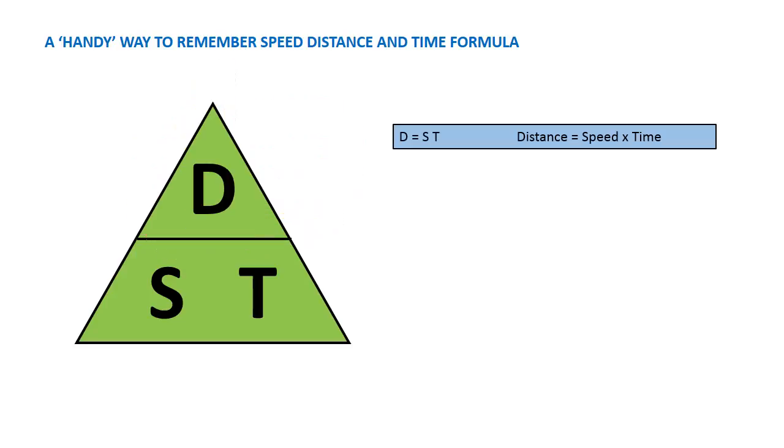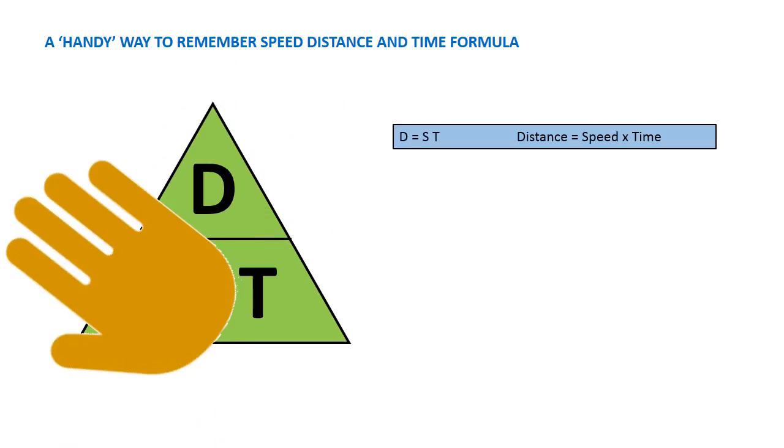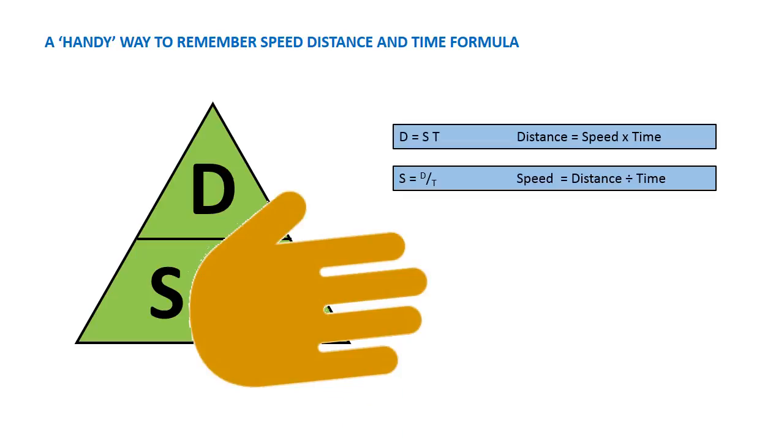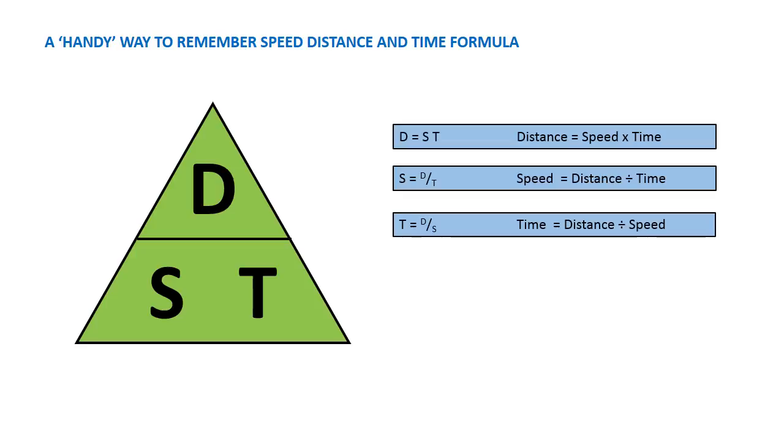If you want a formula for speed, then cover up S, and you'll find out that S equals D over T, or speed equals distance divided by time. And if you want to find out a formula for time, then cover up T. T equals D over S, or time equals distance over speed. Three formulas are summarised by the one handy device.